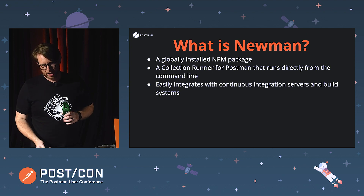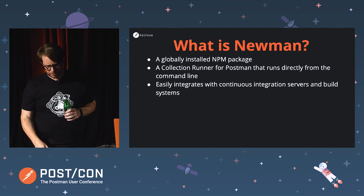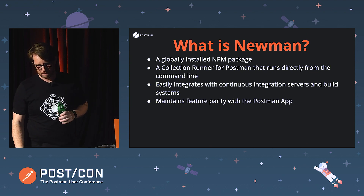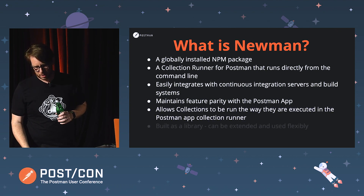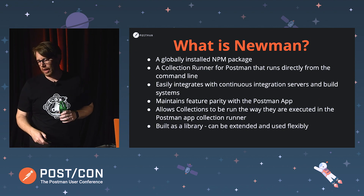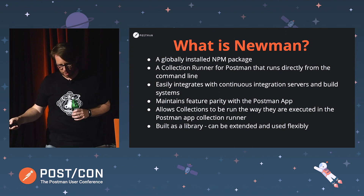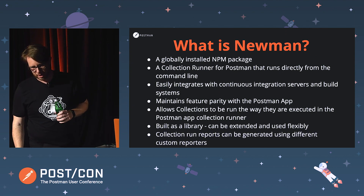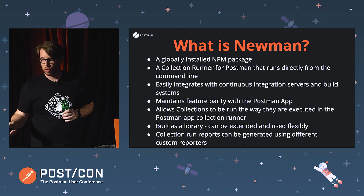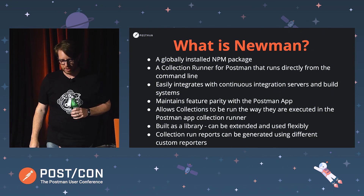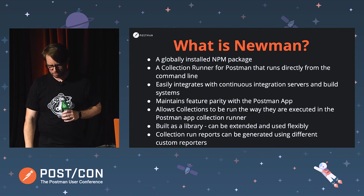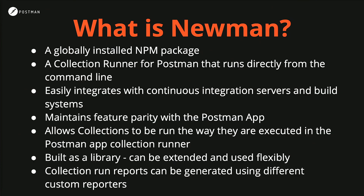Newman has been built from a library from the ground up so it can be extended for use in various ways, such as with CI/CD systems. It allows collections to run the way they execute in the Postman app, same as the Collection Runner. Being built as a library, you can also have custom reporters, which we're going to talk about in our final section. Danny has some really cool things he's going to show around that.